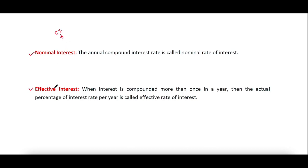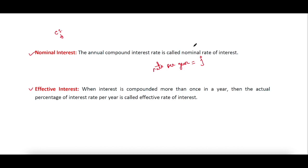Number one is the nominal interest rate, and number two is the effective interest rate. The annual interest rate is the nominal interest rate — the annual compound interest rate is called the nominal rate of interest. We denote rate per year by j. If your question does not say the interest rate is the effective interest rate, it means this is the nominal interest rate. When an interest rate is calculated once in a year, the interest rate is said to be nominal.